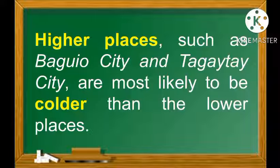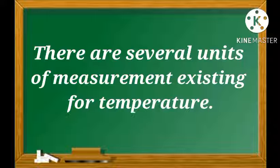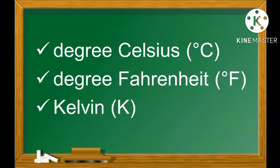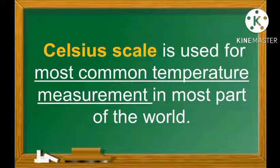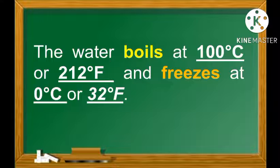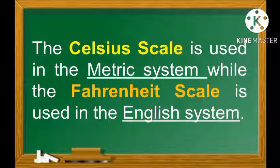Higher places such as Baguio City and Tagaytay City are most likely to be colder than lower places. There are several units of measurement for temperature, but the most common units are degree Celsius, degree Fahrenheit, and Kelvin. The Celsius scale is used for most common temperature measurements in most parts of the world. Water boils at 100 degrees Celsius or 212 degrees Fahrenheit, and freezes at 0 degrees Celsius or 32 degrees Fahrenheit. The Celsius scale is used in the metric system while the Fahrenheit scale is used in the English system.